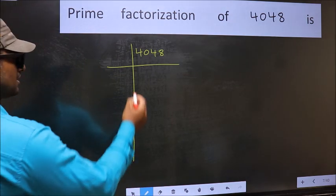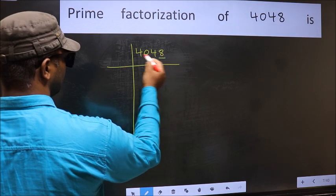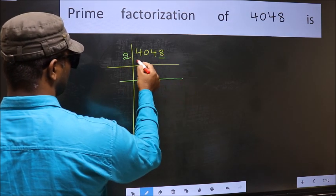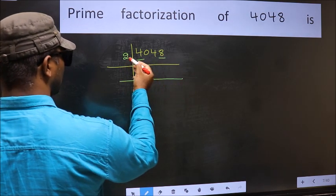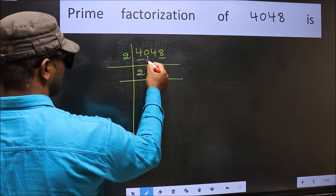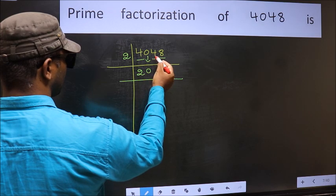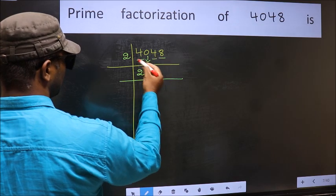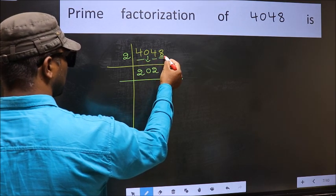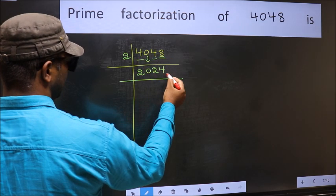In this number, the last digit 8 is even, so take 2. First number 4 — when do we get 4 in the 2 times table? 2 times 2 is 4. This 0 we bring down as it is. The other number 4 — 2 times 2 is 4. The other number 8 — when do we get 8 in the 2 times table? 2 times 4 is 8.